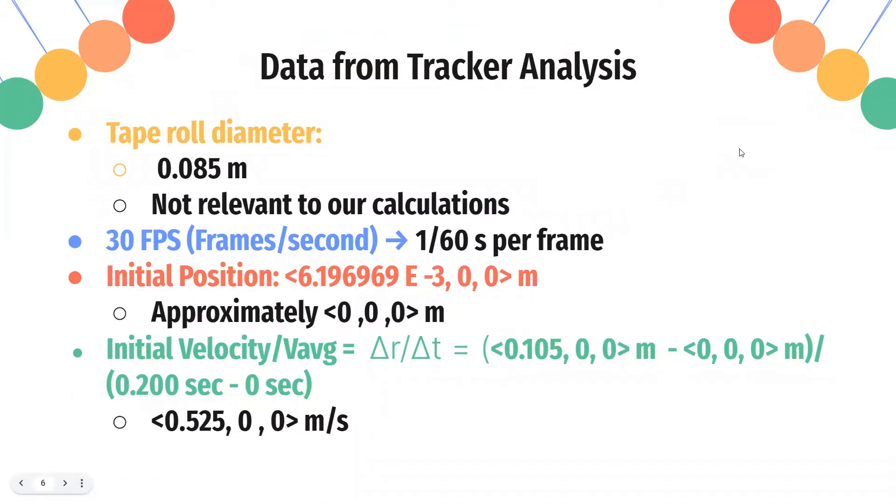But some of the data from tracker analysis, we used 30 frames per second, and we set our approximate initial position to be 0, 0, 0, just to make calculations simpler. And calculating the initial velocity using the velocity average formula as mentioned before, that'll get us to 0.25 meters per second as the average velocity.